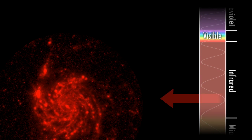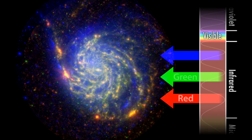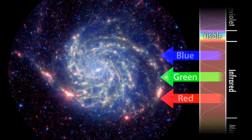For instance, this Spitzer image of the pinwheel galaxy draws the imagery entirely from the infrared spectrum, but presents them in human-friendly colors.